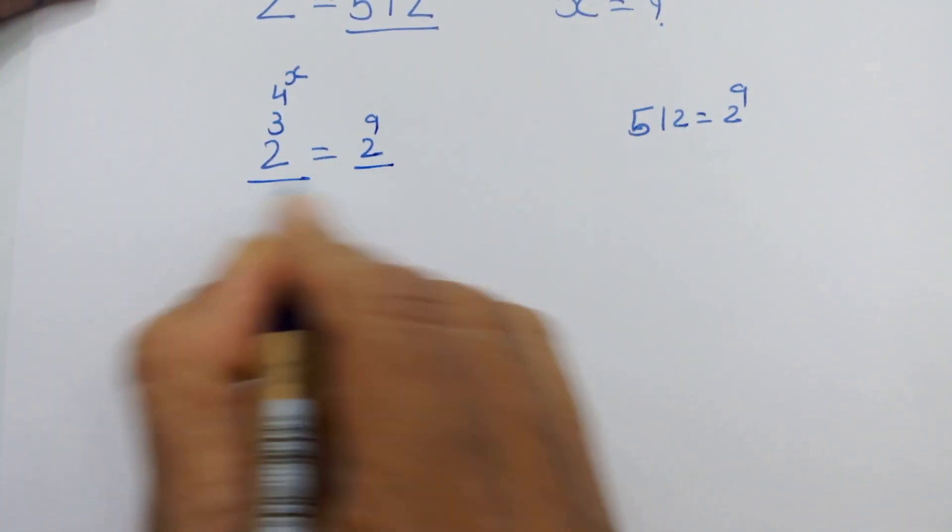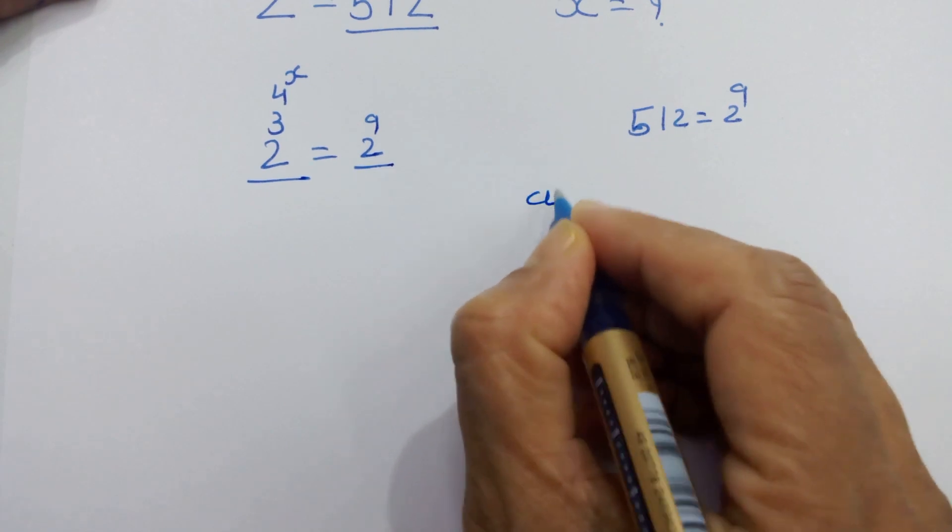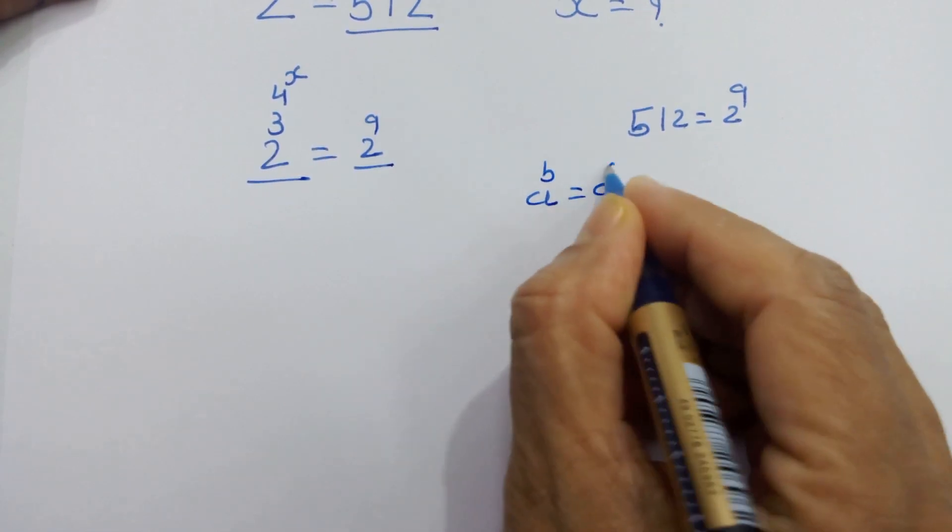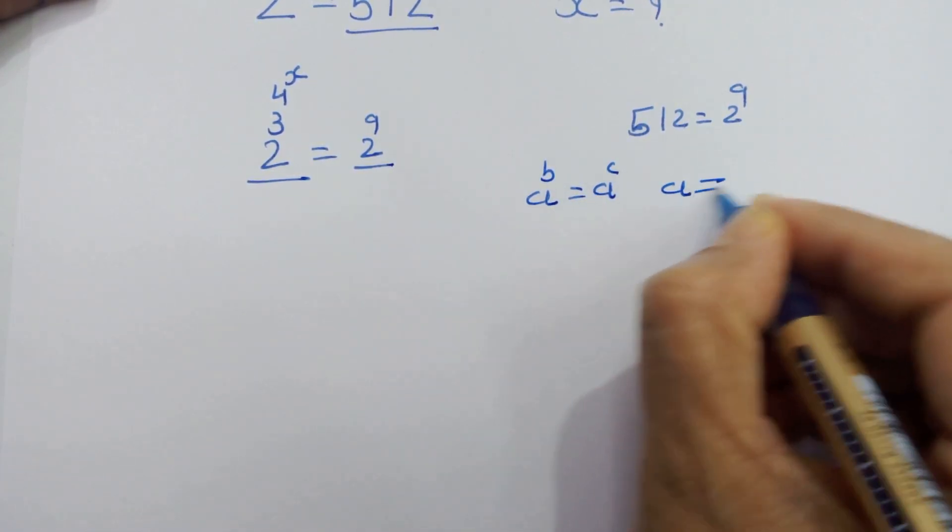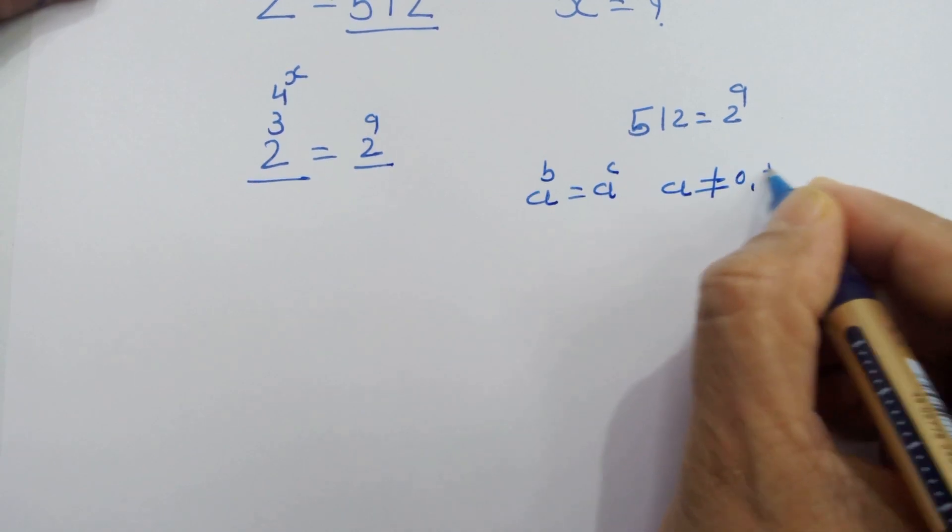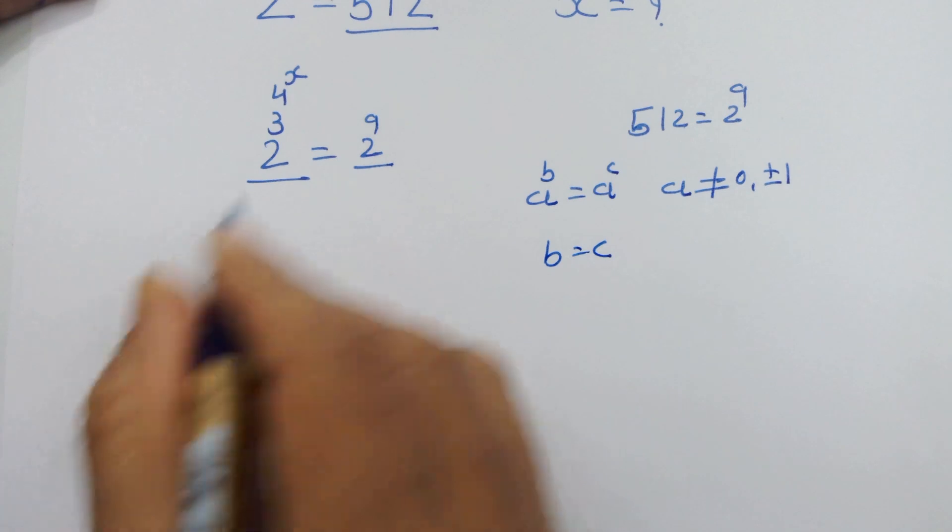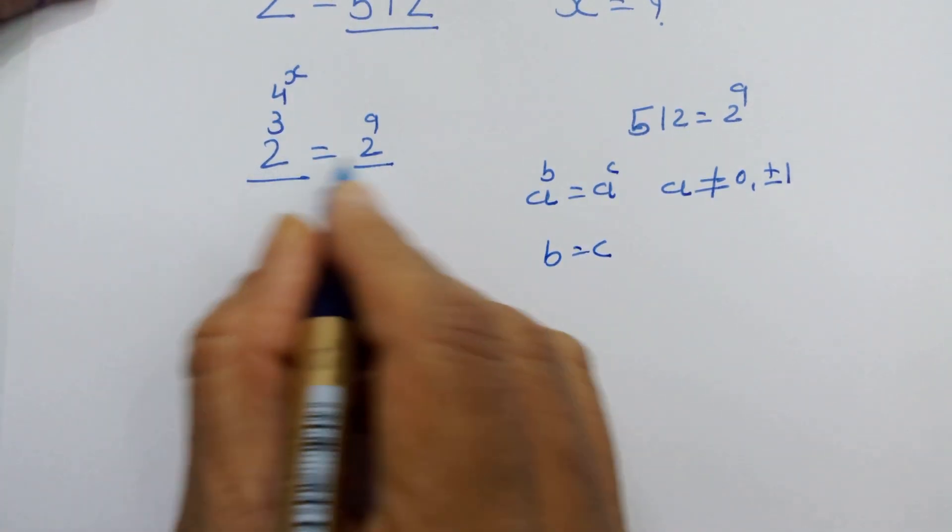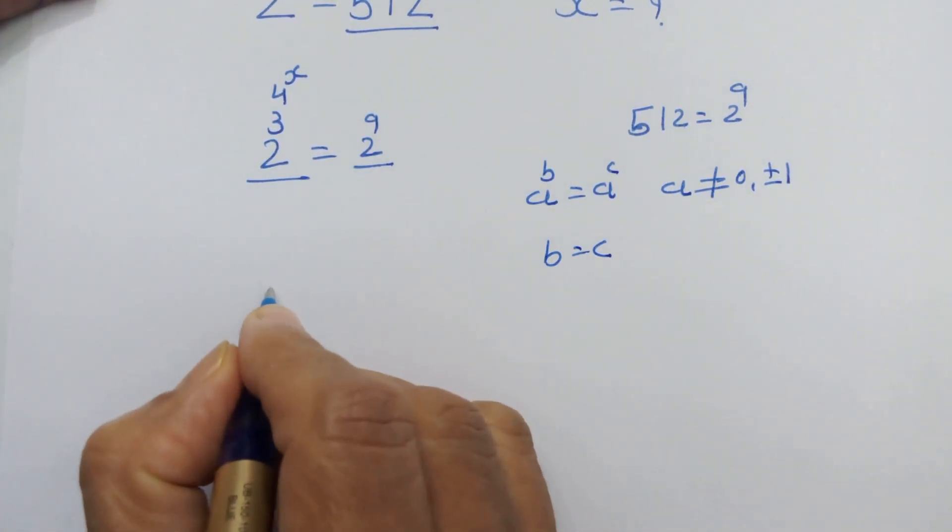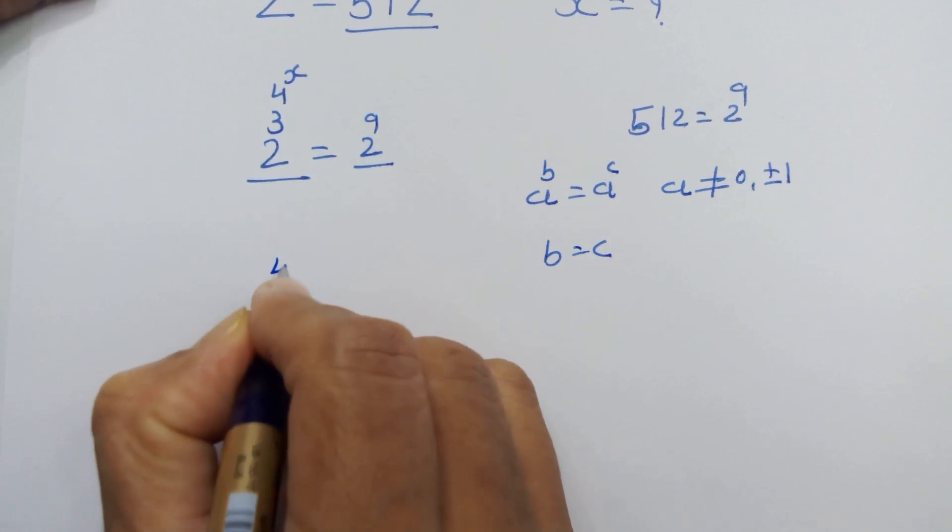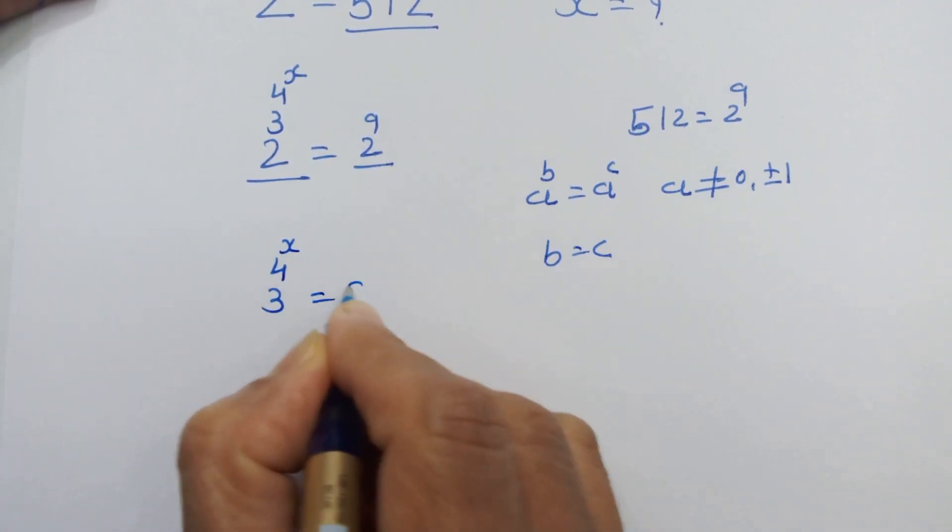Now we have the same base on both sides. If we have a raised to b equals a raised to c, and a is not equal to 0 or plus or minus 1, then we can equate the exponents. Here we have the same base on both sides, so we can equate: 3 raised to 4 raised to x equals 9.